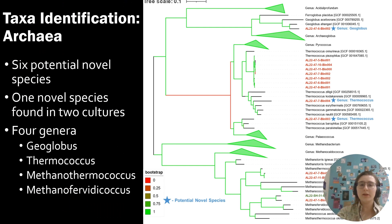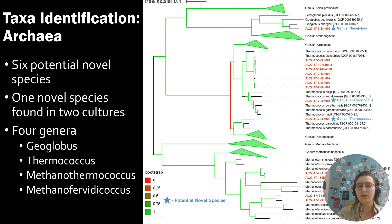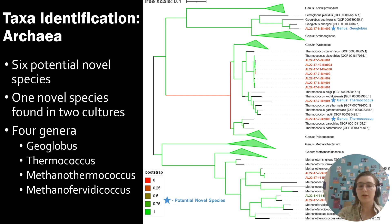Taxonomically, when looking at the archaea individually, 6 of the 14 archaea were potential novel species, including one novel species that was found in two separate cultures. These novel species encompass four separate genera: Geoglobus, Thermococcus, Methanothermococcus, and Methanococcus.